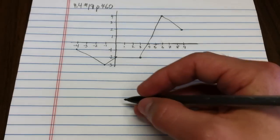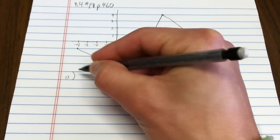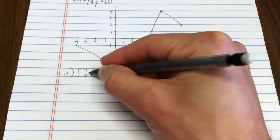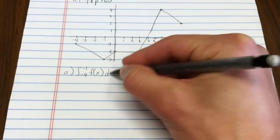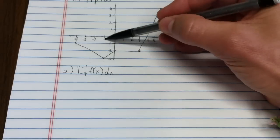So we have four parts to this. The first part, part a, says find the integral from negative 4 to negative 1 of f of x dx. So negative 4 over to negative 1.